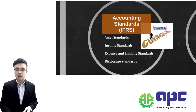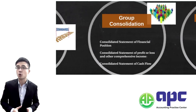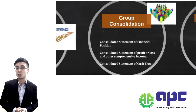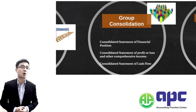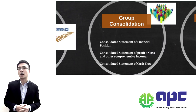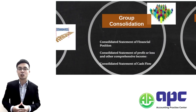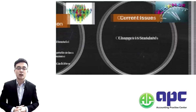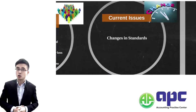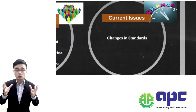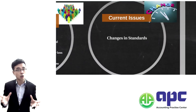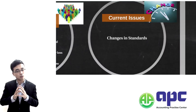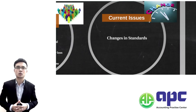Once we've learned that, we quickly apply those standards into group consolidation in Paper 2 — for example, the consolidated SFP, the consolidated P&L and OCI, and also cash flow. We will also cover the current issues that appear in Question 4.